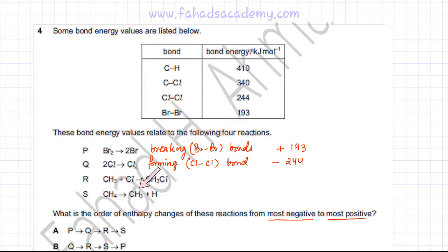Now moving to reaction R. If you look carefully in this reaction, you'll notice that CH3 is being added a Cl atom to form CH3Cl. That basically means that this carbon over here is making an extra bond with the Cl. So the only thing that's happening is you're forming a C-Cl bond.